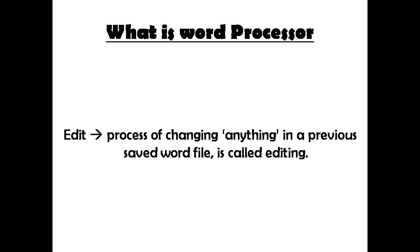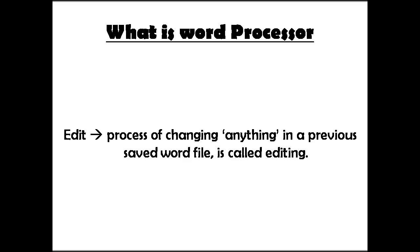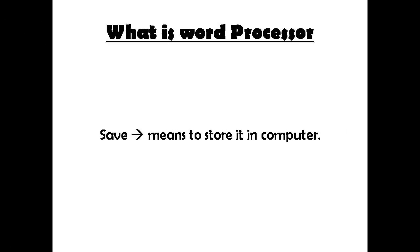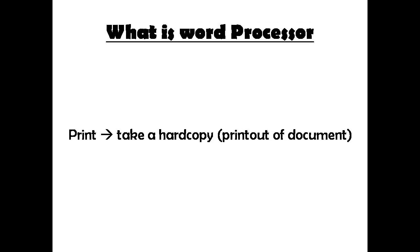Edit or editing is the process of changing anything in a previously saved word file. The third thing is save — save means to store a file in the computer. You can save your file by pressing the shortcut Ctrl+S. When you press Ctrl+S, it will ask you the location and the name of the file. By default, the file goes to the Documents folder of the computer.